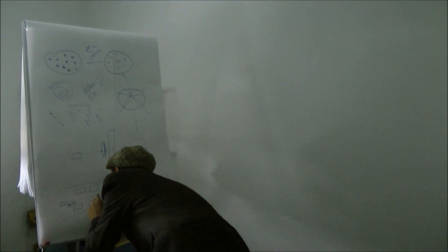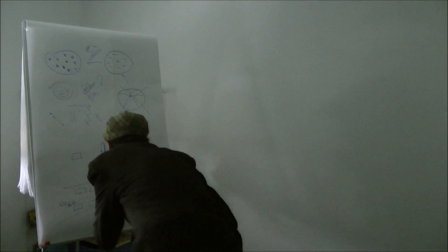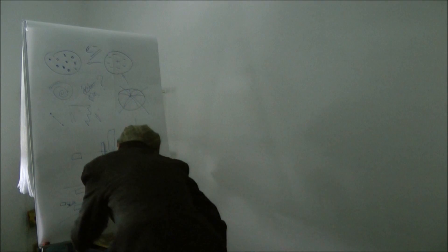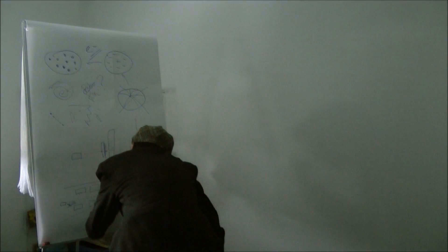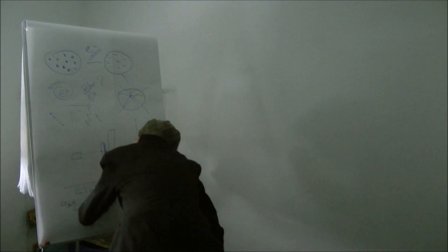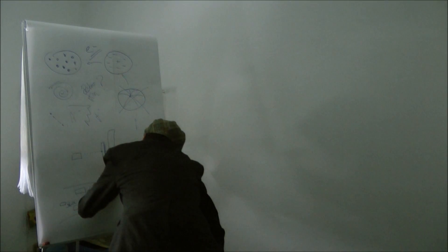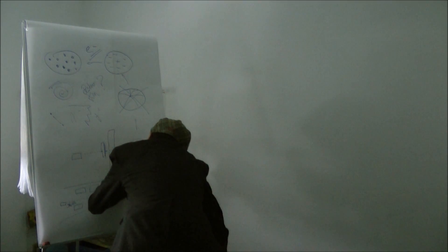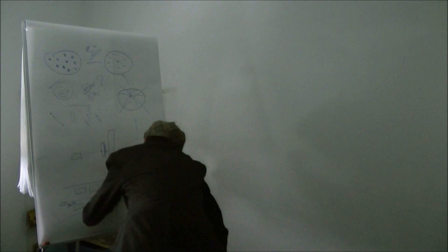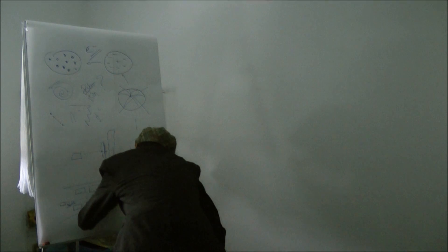Zu dieser Zeit machte der Engländer Joseph J. Thompson eine große Entdeckung. Er entdeckte das Elektron. Vor Thompsons Entdeckung stellte man sich vor, dass alles aus kleinen Bausteinen zusammengesetzt war, den Atomen.